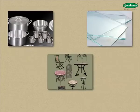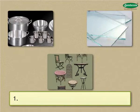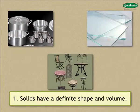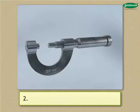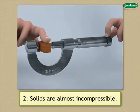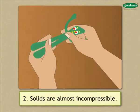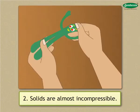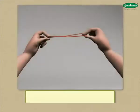The characteristic properties of solids are: solids have a definite shape and volume; solids are almost incompressible — their volume is not changed by any outside force and their shape does not change even if an external force is applied. That is why solids are rigid.